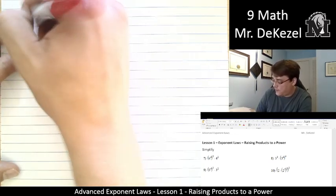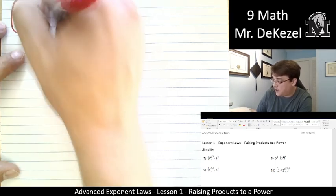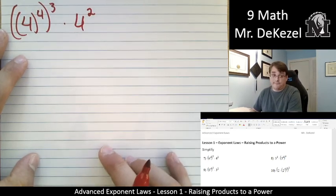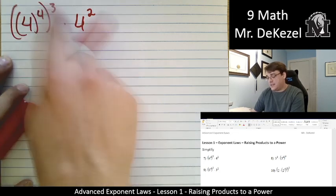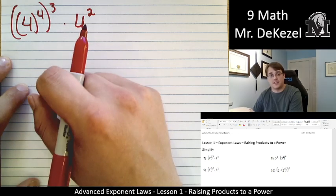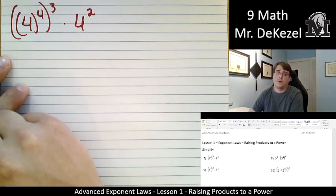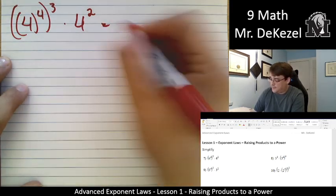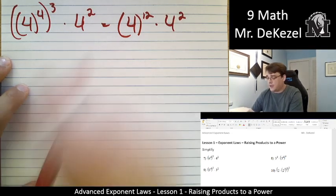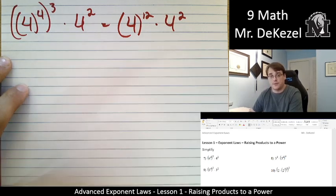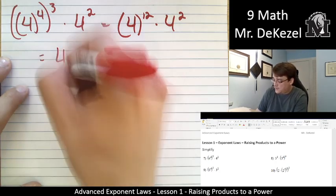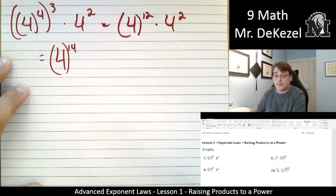We have first 4 to the power of 4, and then that is all to the power of 3, multiplied by 4 to the power of 2. We need to simplify this so we can add the exponents. I know that if I do an exponent of an exponent I'm multiplying them together, so this is the same as 4 to the power of 12 multiplied by 4 to the power of 2. 3 times 4 is 12, and since they're multiplied together I just add their exponents — that's 4 to the power of 14.